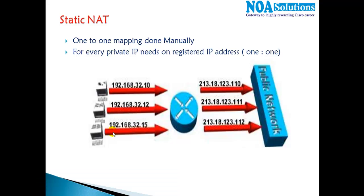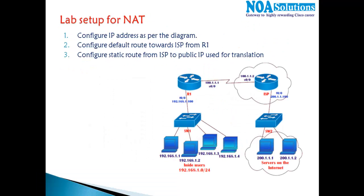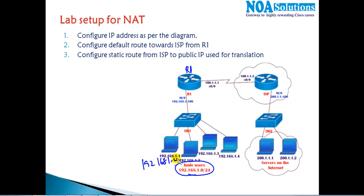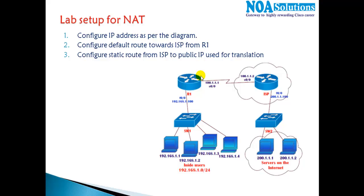Let me explain the lab setup I'm going to use for all the remaining NAT labs. I have a router - Router 1 - which is acting as my company router, with some users in the LAN. These are all my inside private users using the 192.168.1.0 network. When they go outside through Router 1, they should go with some public IP address. We are not connecting to the real internet here; instead, we're connecting our router in Packet Tracer to another router - Router 2 - which is acting as my ISP router, connected via the serial 0/0 interface.